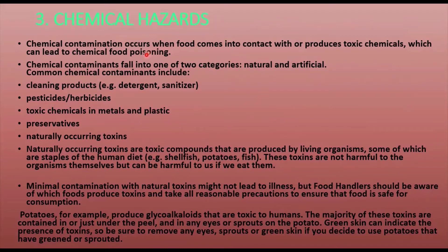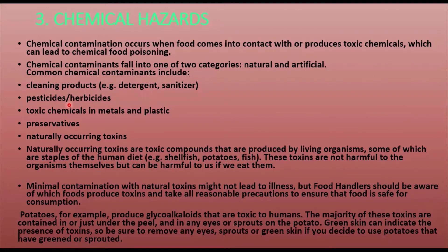Moving to chemical hazards. Chemical contamination can occur when food comes in contact with or produces toxic chemicals, which can lead to chemical food poisoning. Chemical contaminants fall into two categories: natural and artificial. Common chemical contaminants include cleaning products such as detergents and sanitizers, pesticides and herbicides, toxic chemicals in metals and plastics, preservatives, and naturally occurring toxins.